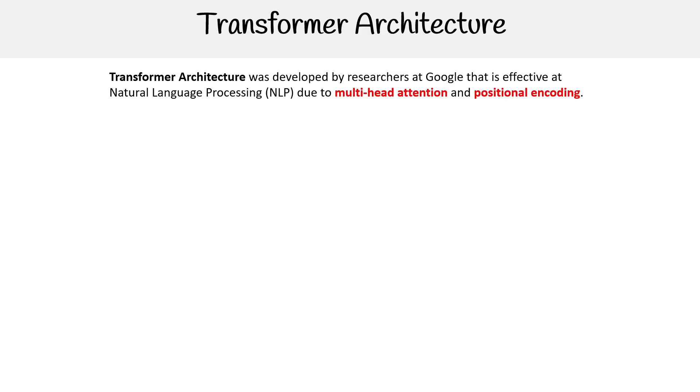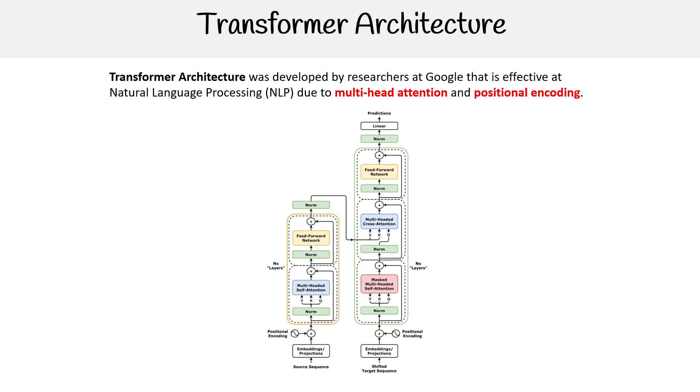The Transformer architecture was developed by researchers at Google that is effective at natural language processing due to multi-head attention and positional encoding. Here is that architecture from the white paper 'Attention is All You Need,' because that is the special mechanism it is utilizing to pull off the feats that it is doing.